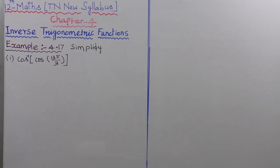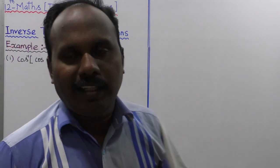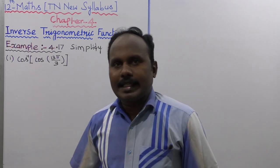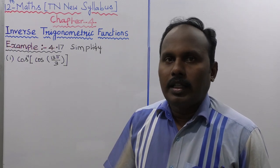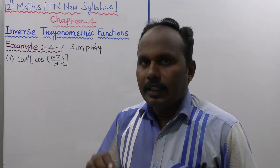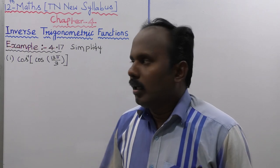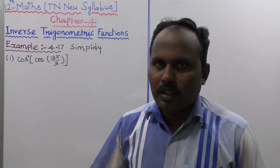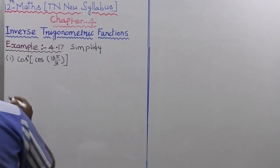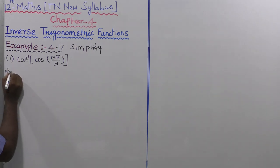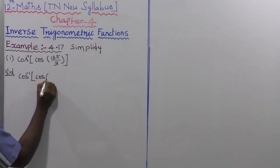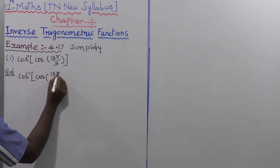Example 4.17: Simplifying cos inverse of cos(13π/3). The form is cos⁻¹(cos θ) = θ. So first of all, let us take the value of the given term: cos⁻¹(cos(13π/3)).